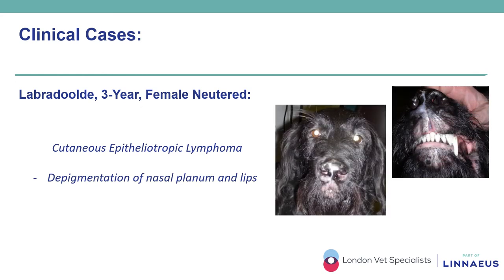A three-year-old female neutered Labradoodle presented with depigmentation of the nasal planum and of the lower and upper lips. Lesions also involved part of the eyelids and the chin, where papules and nodules were present. The list of differential diagnoses was vast, and histopathology revealed features consistent with cutaneous epitheliotropic lymphoma — quite unusual in a dog of this age.